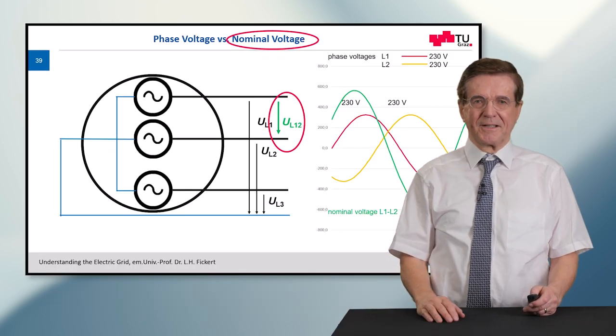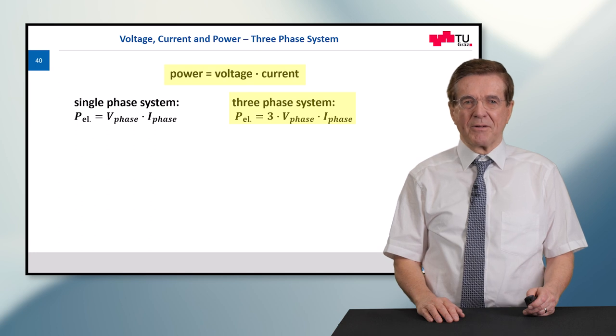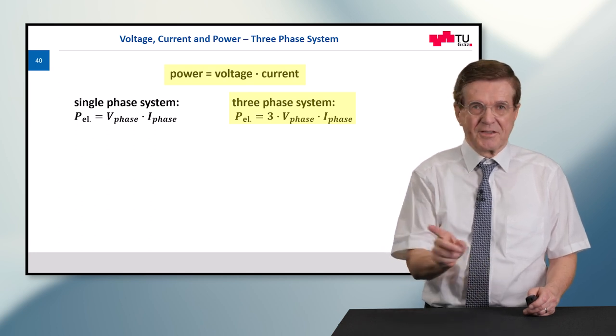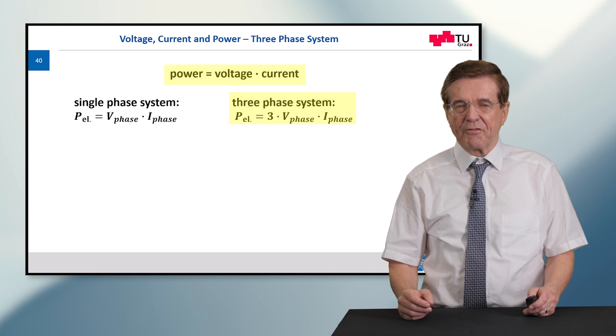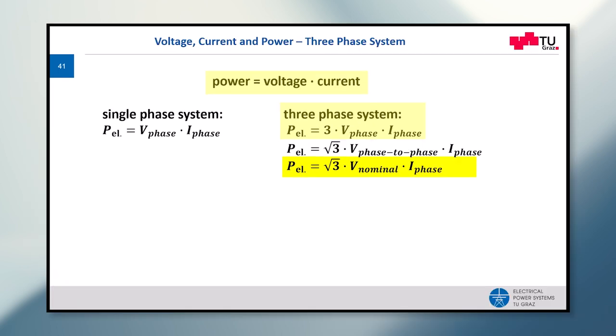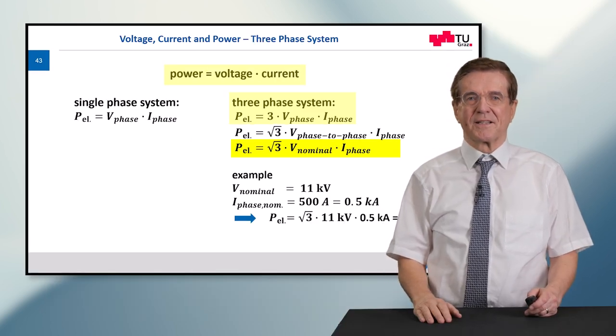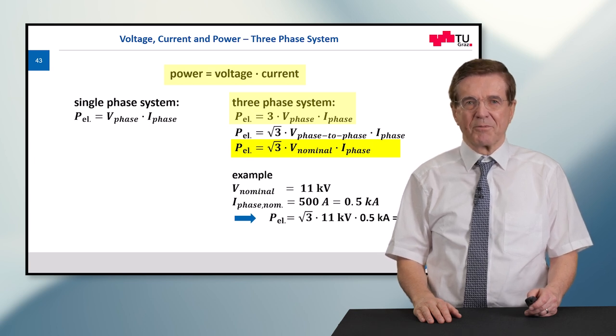And now let's make an example to conclude this lecture. In a single phase system the power is just phase voltage times phase current. In a three phase system we have three times that much. And now remember there is a difference between phase voltage and nominal voltage and this is expressed by a factor of root three. This is for specialists I would say. And then let's give an example. This is an 11 kV grid in which a current of 500 amps is flowing to the loads. And now if we calculate this the total power dissipated in this three phase real life system is 9.5 megawatts.